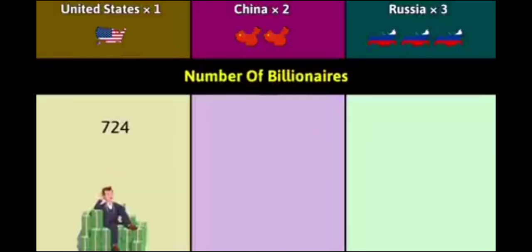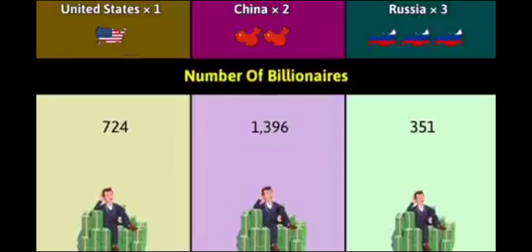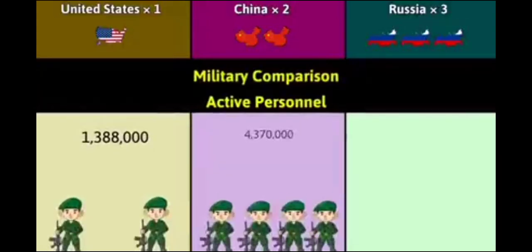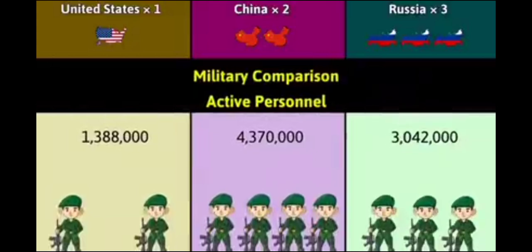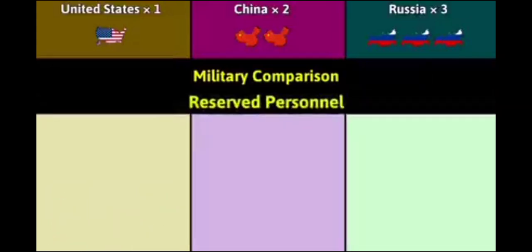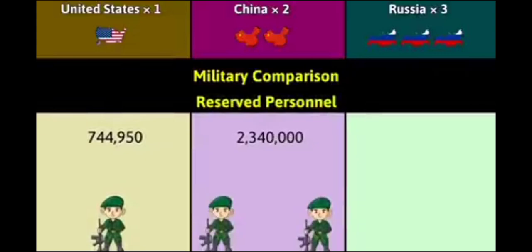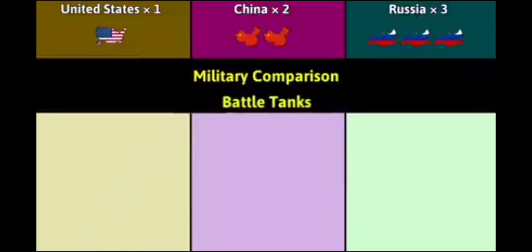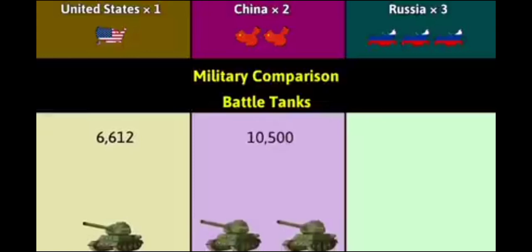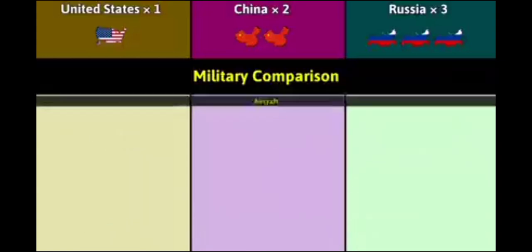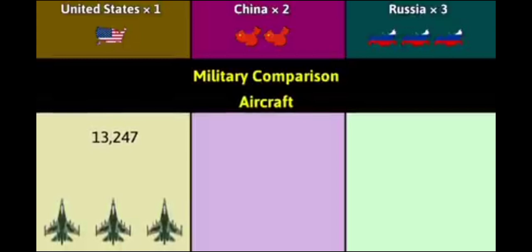Number of billionaires: 724, 1396, 351. Military comparison — active personnel: 1.38 million, 4.37 million, more than 3 million. Reserve personnel: 744,950, 2.34 million, 6 million. Battle tanks: 6,612, 10,500, 38,130. Aircraft: 13,247, 6,570, 12,512.